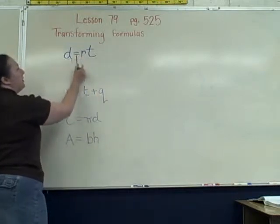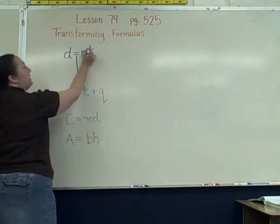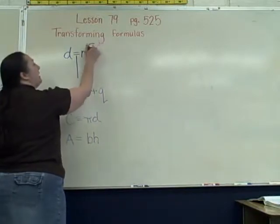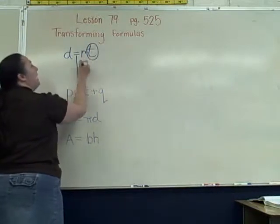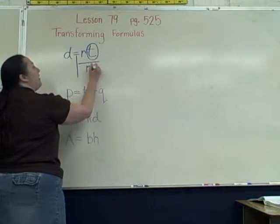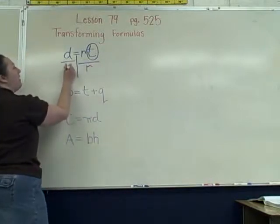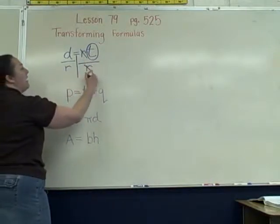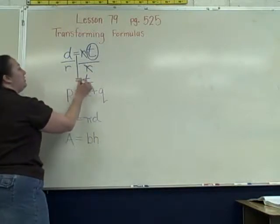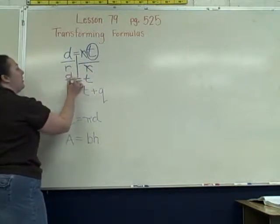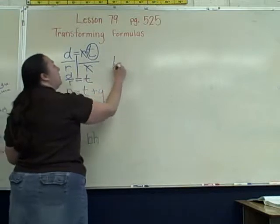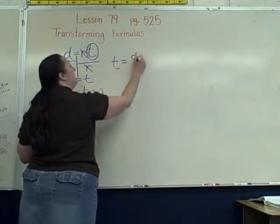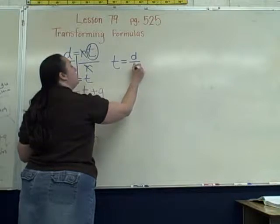This r and this t are multiplying, so I do the opposite operation. I split it at the equal sign, identify that this is multiplication, and divide both sides by r. The r cancels, and I get t is equal to d over r. In other words, time equals distance over rate.